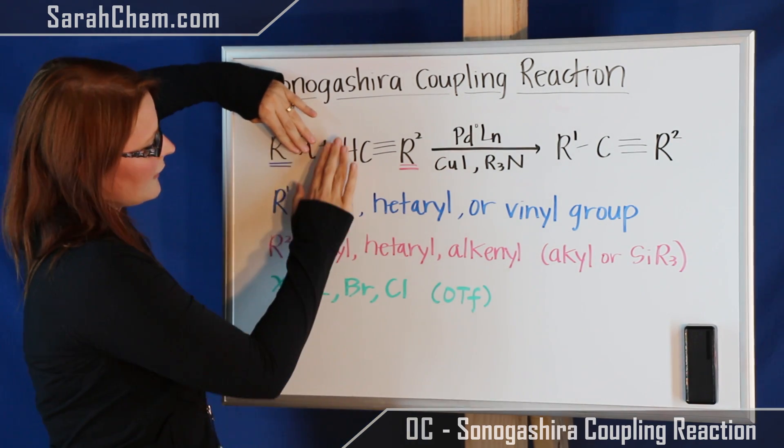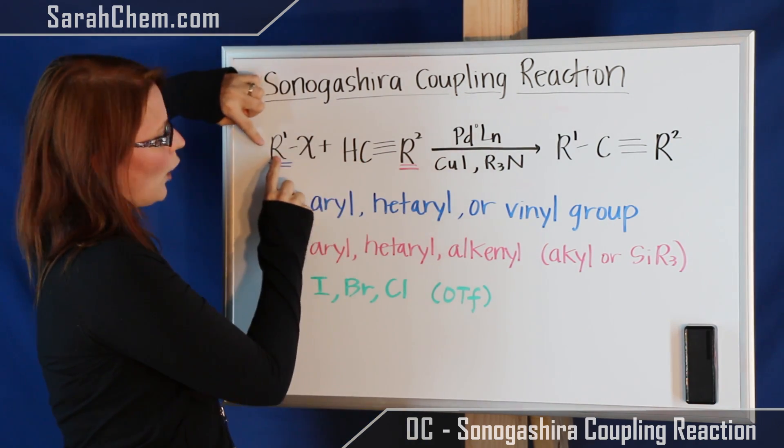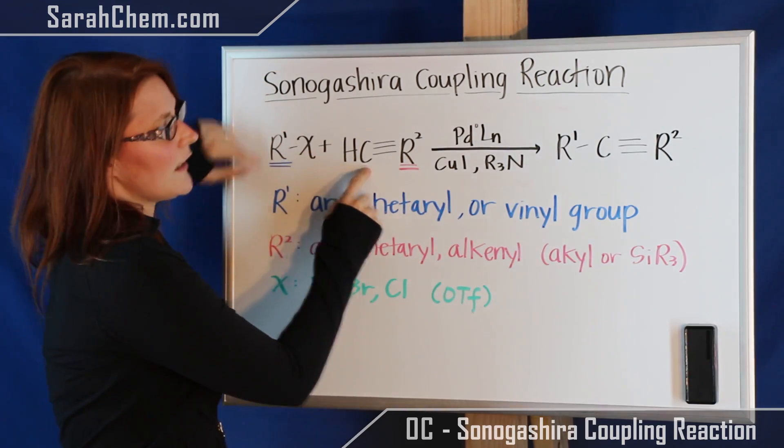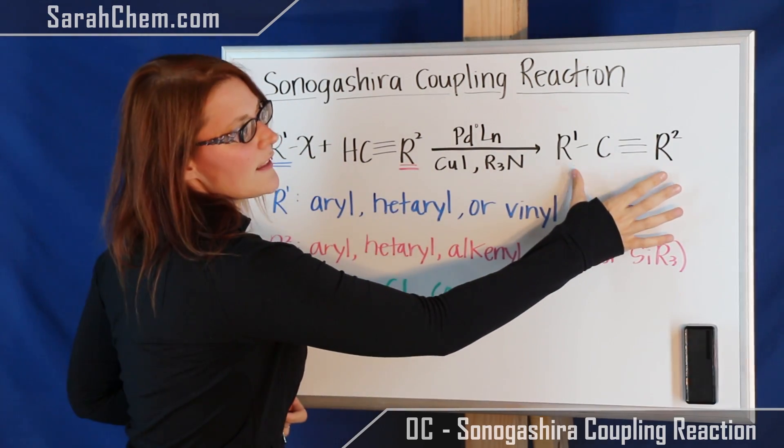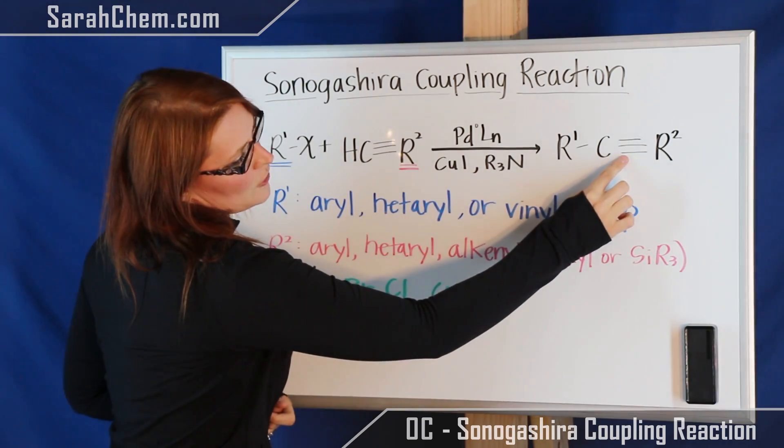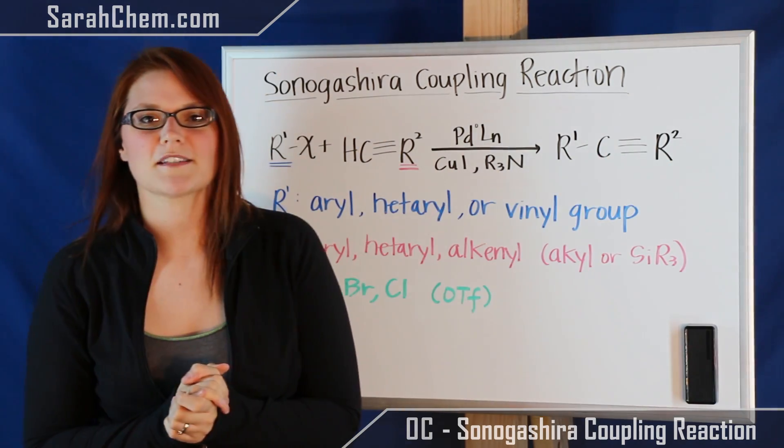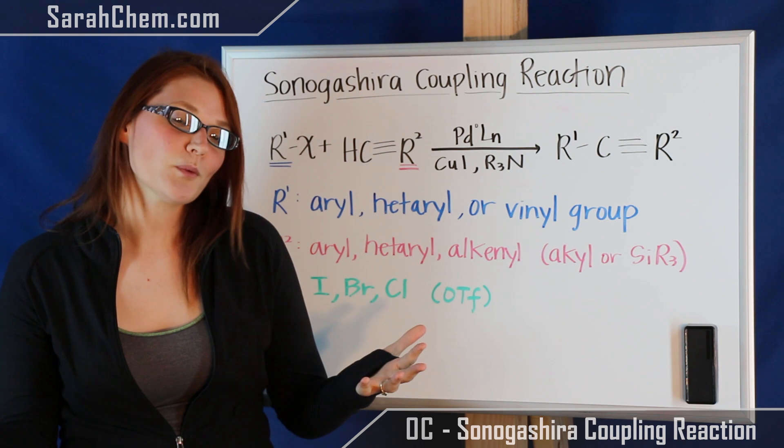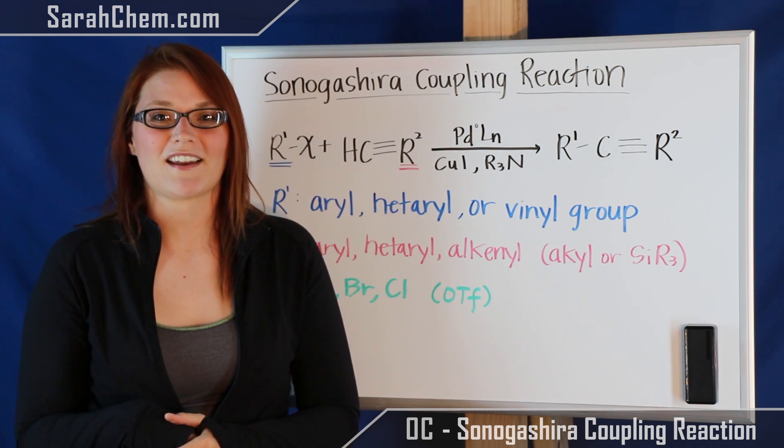And so what's going to happen is you're removing this and you're removing that and you're going to join R1 directly to that C. So your final product that you get out is this one here where now this group has had an alkynalation happen to it and we have now added that triple bond. So those are some of the details you want to know about it and that's how you predict product.